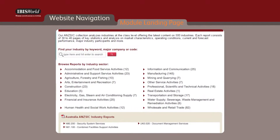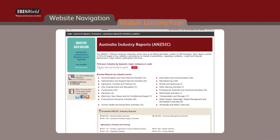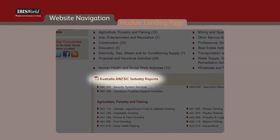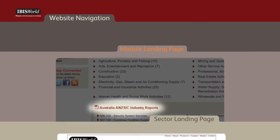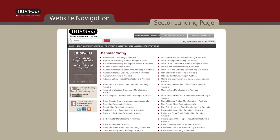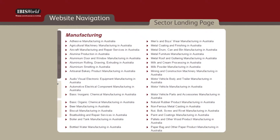Or you can click on a sector and the sector landing page listing the industries within that sector will be displayed. Also on this page, there's a list of reports available in PDF format. The sector landing page includes hyperlinks for all industry reports categorized within that sector.